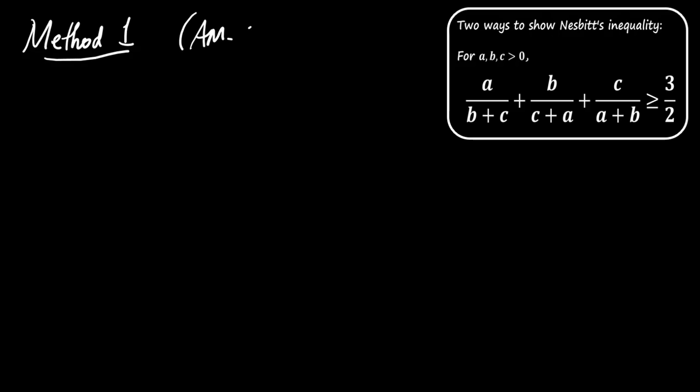Let's begin with the first method, using the Arithmetic Mean Geometric Mean Inequality, or AM-GM. To make the expression simpler, let's introduce some variables.